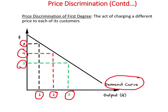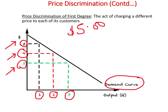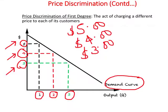Under first-degree price discrimination, the monopolist charges each customer based on their willingness to pay: $5 from the first customer, $4 from the second, and $3 from the third, for a total of $12. Compared to $9 under uniform pricing, the monopolist makes significantly more.